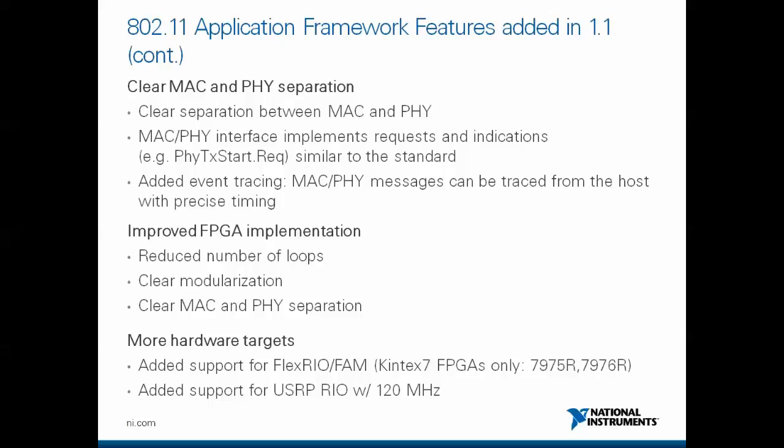We also support more hardware targets. We added support for the FlexRio and frontend adapter module, but this is only for the Kintex 7 FPGA — the 7975R and 7976R. We also added support for the 120 MHz version of the USRP Rio. In the next video, I will go through the demo script together with you so that you can learn how to set up the system and demonstrate the 802.11 application framework. Thank you for watching.